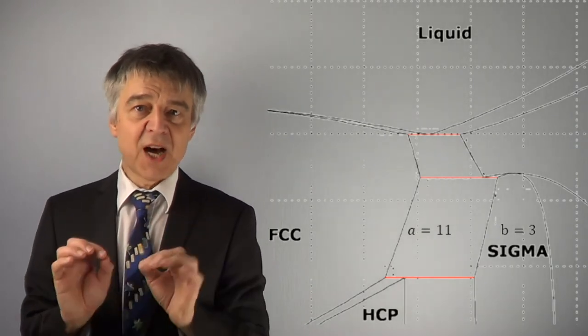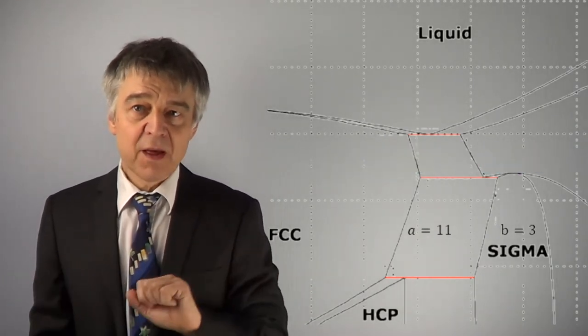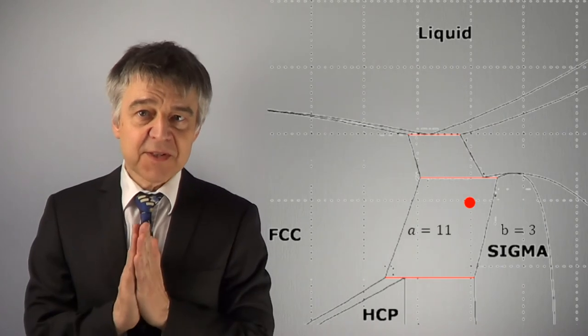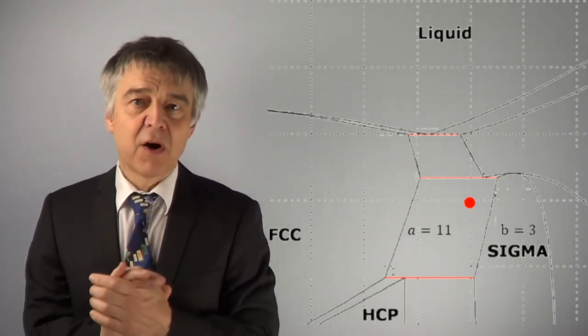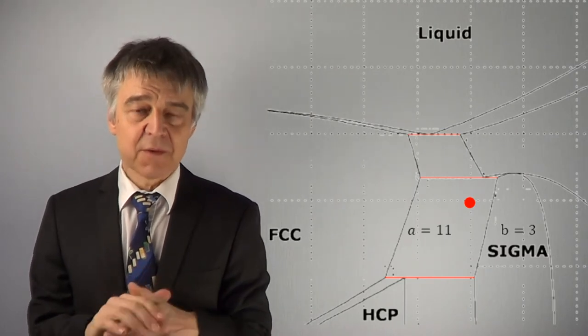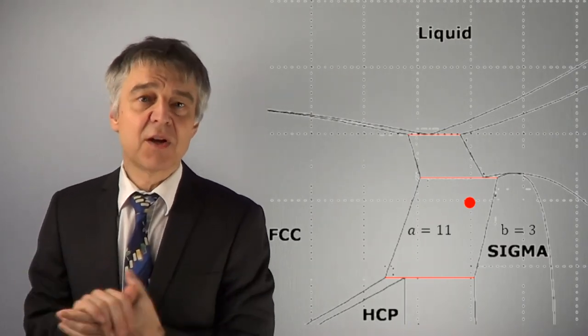We can draw a tie line through the point. This connects the FCC phase with the sigma phase. It is therefore a heterogeneous mixture of solid FCC and solid sigma.